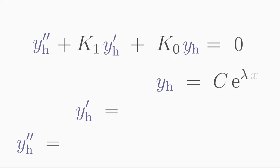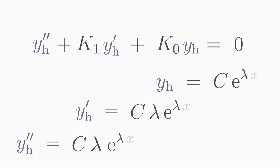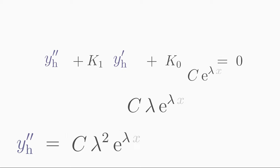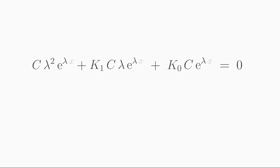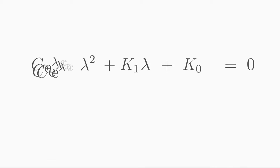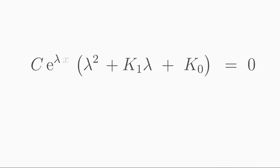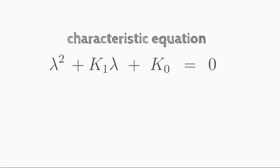Since the first and second derivatives of yh occur in the general formula of the differential equation, we must differentiate our exponential ansatz twice. The first derivative is yh prime equals c times lambda times e to the power of lambda times x. The second derivative is c times lambda squared times e to the power of lambda x. Now we can insert the exponential ansatz and the corresponding derivatives into the differential equation.